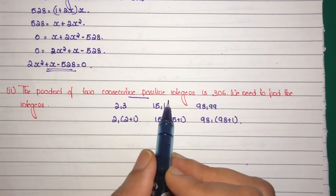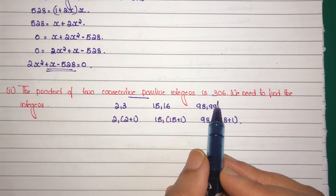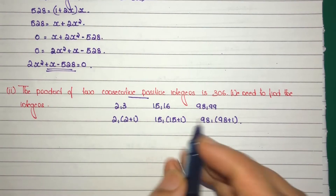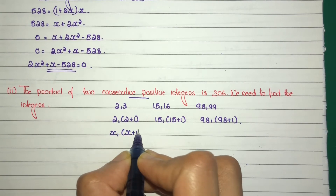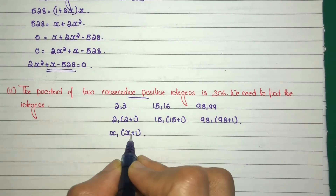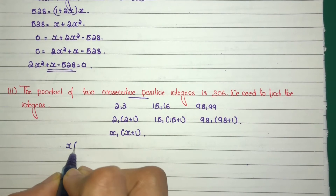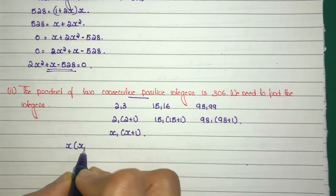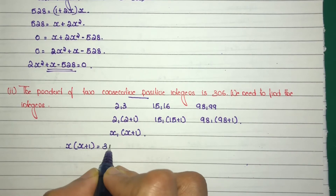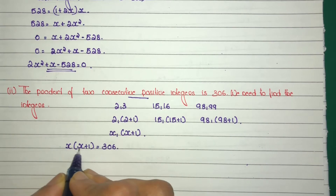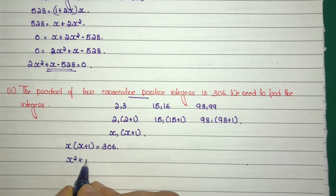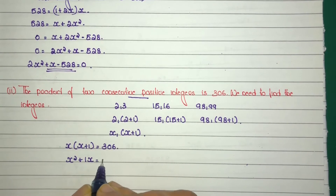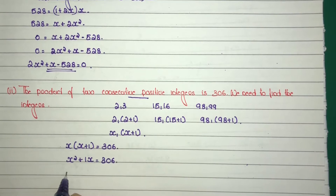Given: the product of two consecutive positive integers is 306. Let the first number be x. Then the second number is x plus 1. Their product equals 306, so x times (x plus 1) equals 306. Expanding: x squared plus x equals 306.